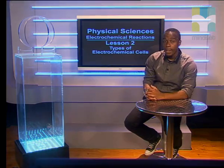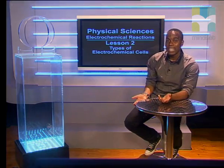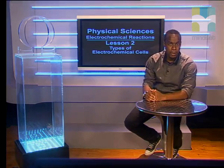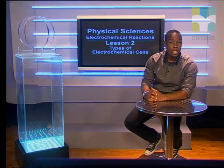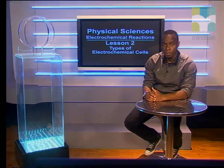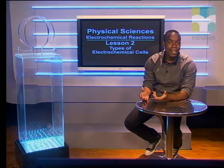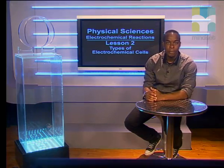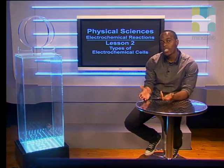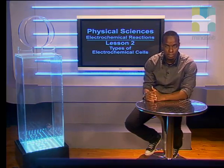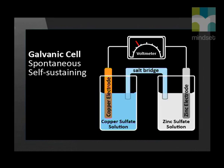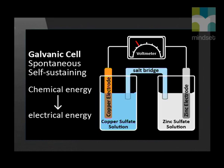Welcome, Grade 12s. Now that we know the link between electricity and chemistry, we can look into the two types of electrochemical cells. Oxidation-reduction, or redox, reactions take place in electrochemical cells. There are two types of electrochemical cells. The first type is a self-sustaining or spontaneous electrode reaction that takes place in the galvanic cell.